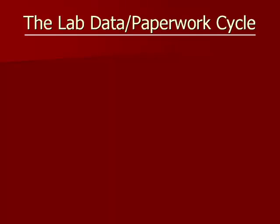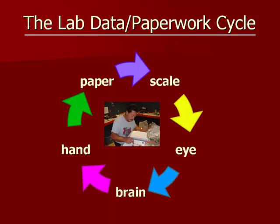Let's talk about the lab data paperwork cycle — the individual steps that each data element has to transit through on the way to paper. First, a material sample is put on a scale and the scale takes a reading. The technician then visually looks at that reading, processes it in the brain, activates the hand, moves it over to the paper, and writes the information down — hopefully in the right cell and without a transposition or transcription error. This cycle goes on for each data element: scale, eye, brain, hand, paper.